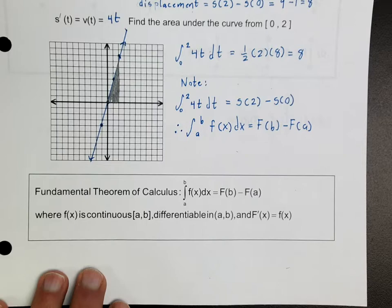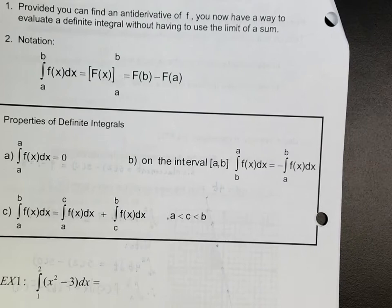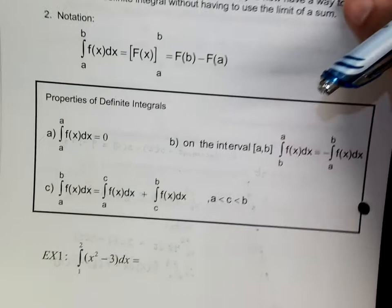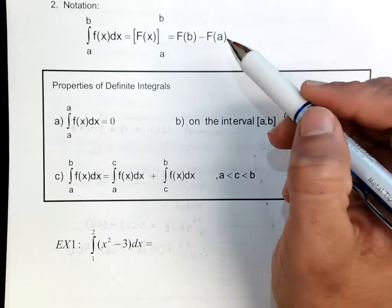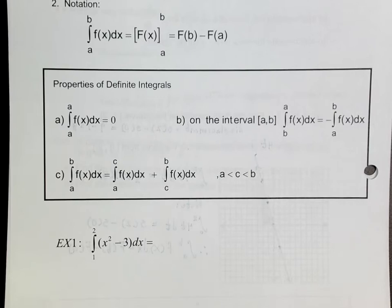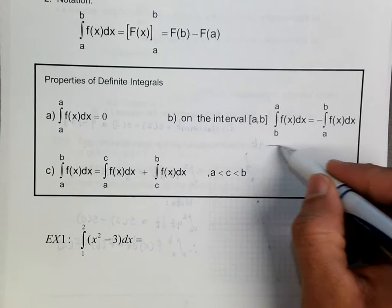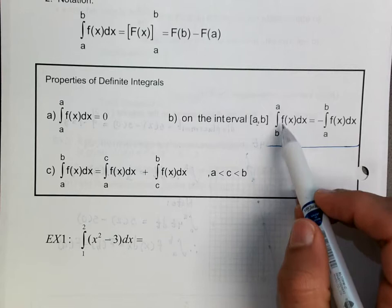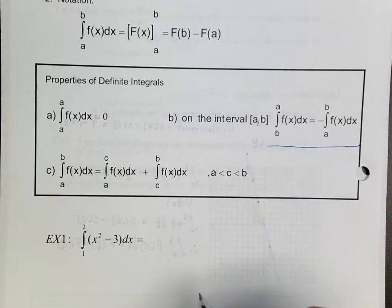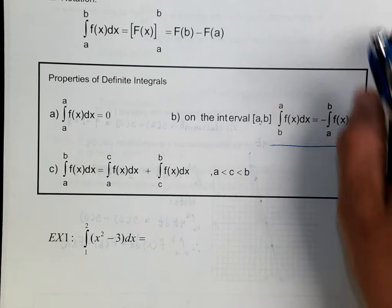There's not a whole lot to say here — it basically means you're going to write it with bracket notation. Also, you can always split up an integral: if you have an interval between a and b written with b as the upper limit, you can write it as negative of a to b. Let's do a few examples.